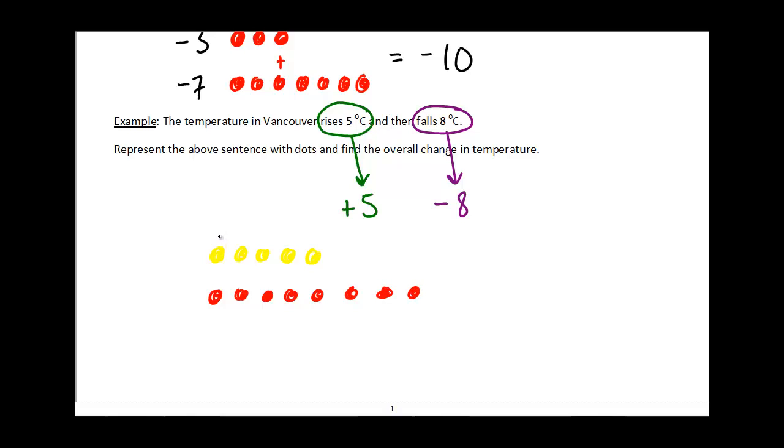And again, each time we have a zero pair that lines up, I can basically just cancel those out because that's what's going to happen. And what I'm left over with, in this case, I've got three negatives left over, so my answer would just be negative three.